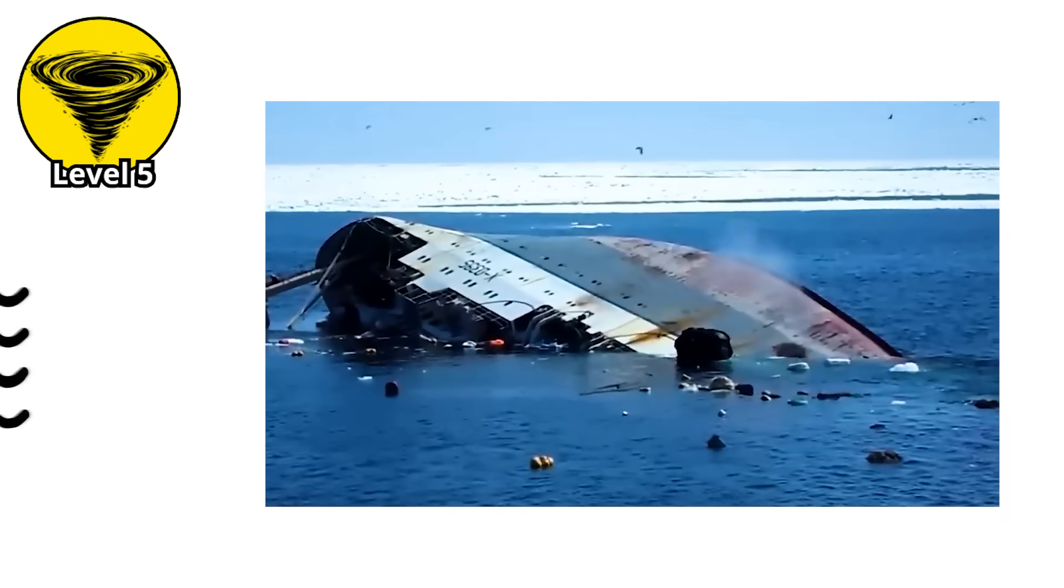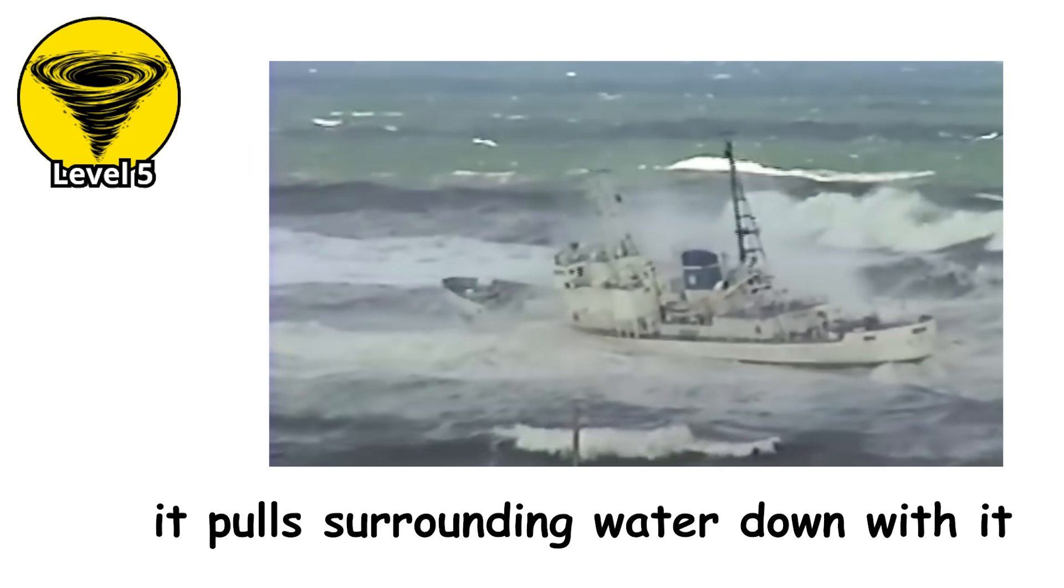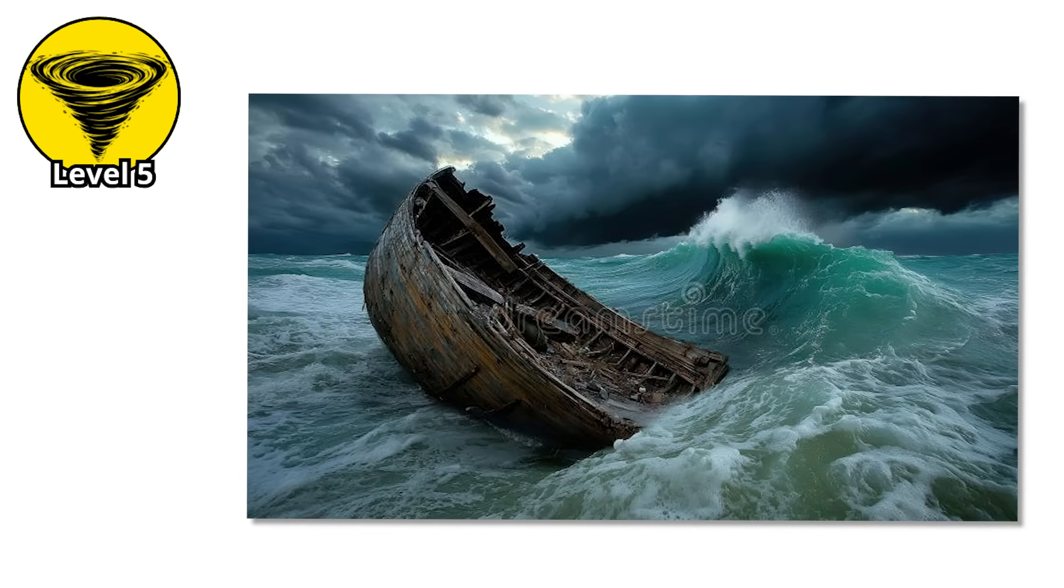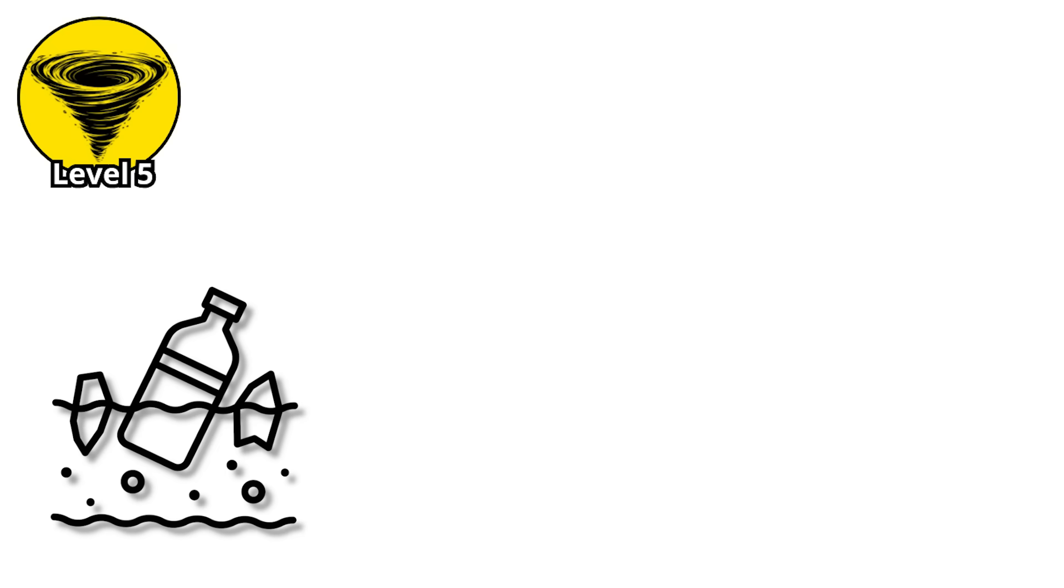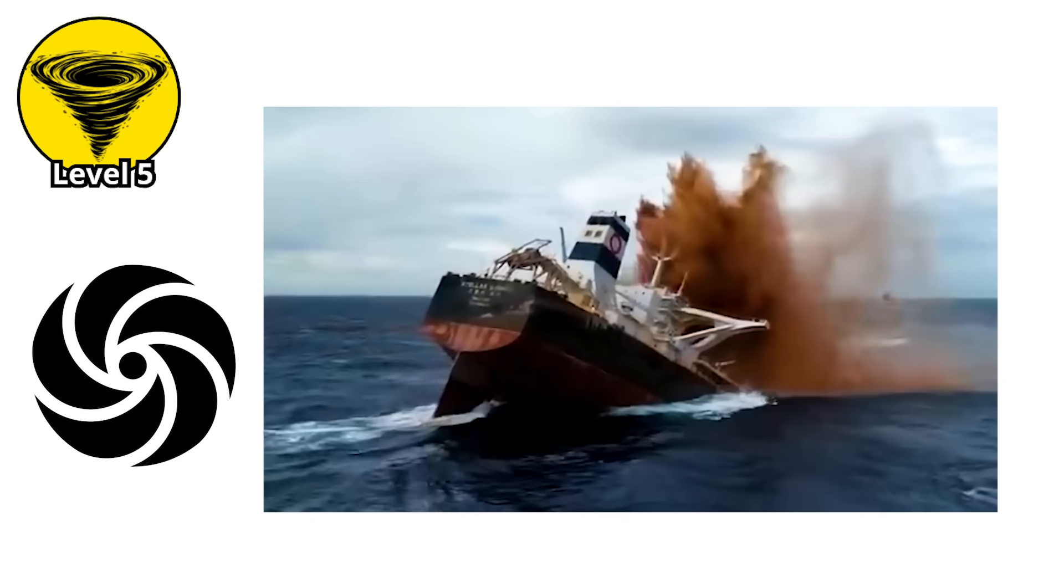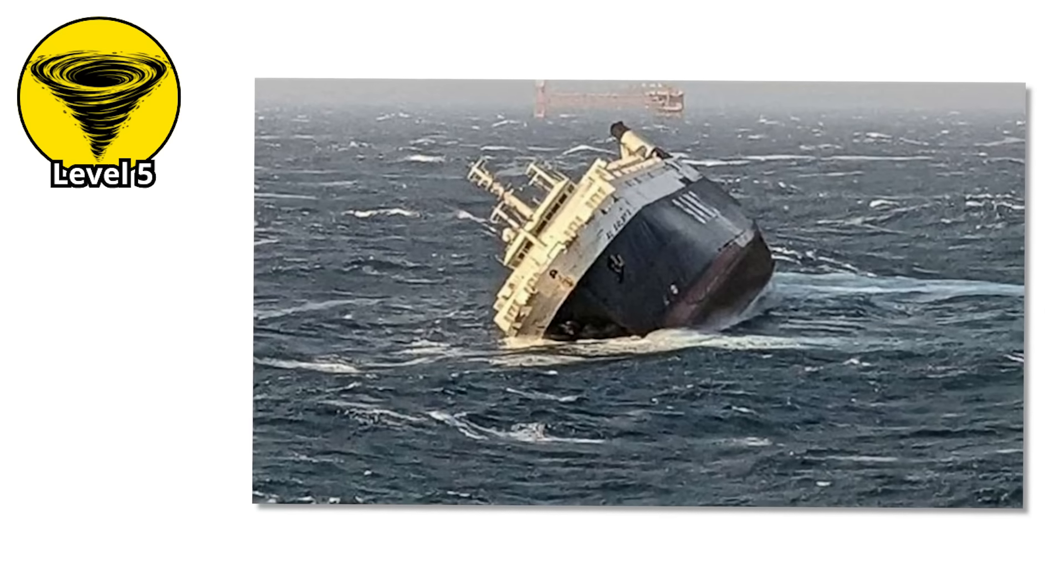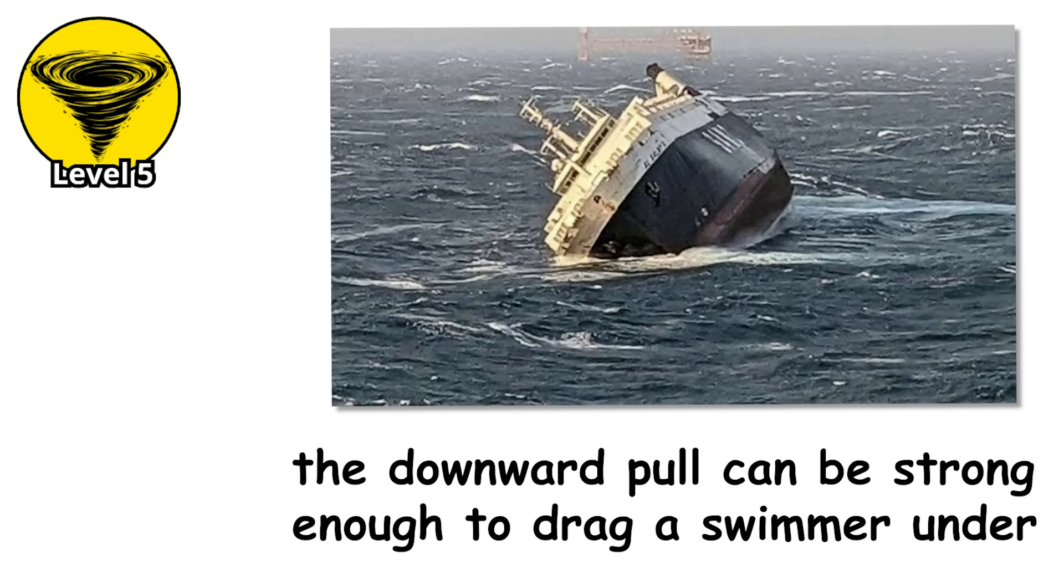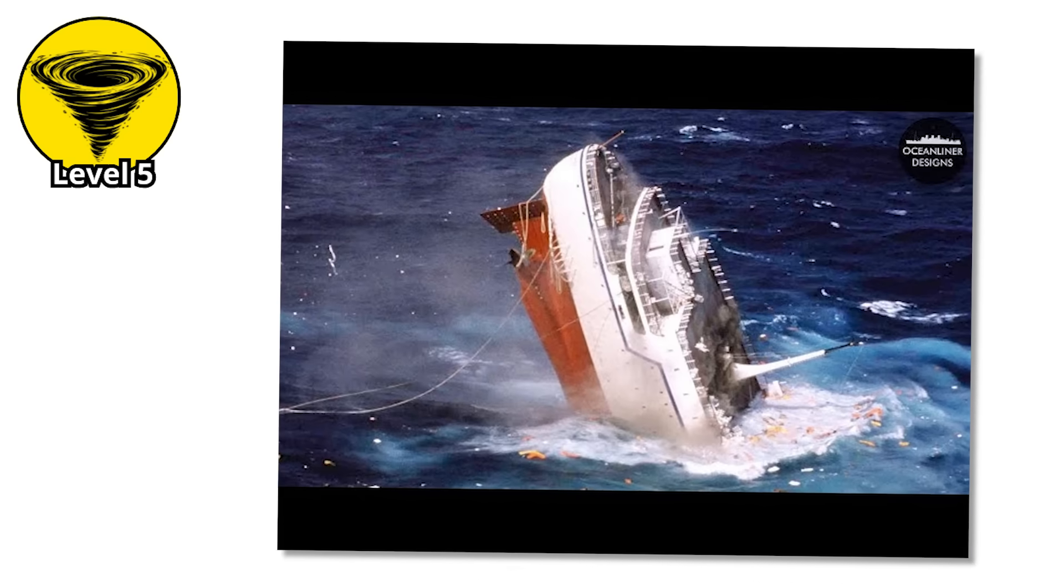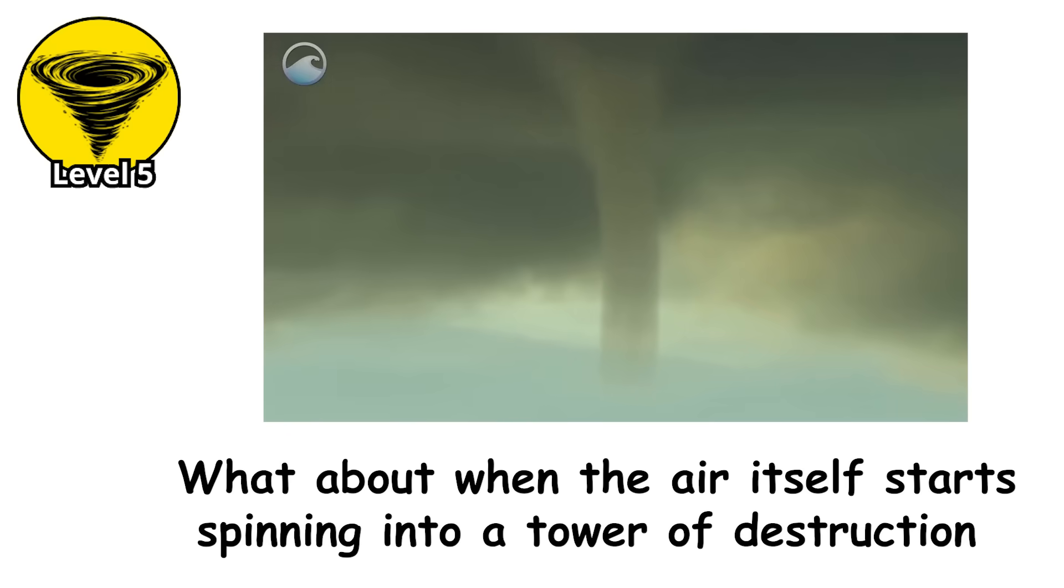But the most dangerous ship-generated vortex is what happens when a large vessel sinks rapidly. When a ship goes down, especially a large one, it displaces millions of gallons of water. As the hull descends, it pulls surrounding water down with it, creating a powerful downward current and a surface vortex that spirals inward toward where the ship disappeared. This suction effect can pull debris, lifeboats, and swimmers toward the sinking site. The myth that a sinking ship creates a massive vortex that will suck down anyone nearby is exaggerated, but not entirely false. The actual danger zone is usually within one to two ship lengths of the sinking vessel. Beyond that, the effect weakens rapidly. But within that zone, the downward pull can be strong enough to drag a swimmer under, especially if they're already struggling with debris or exhaustion. But these whirlpools still require something physical to create them, water or ships or machinery. What about when the air itself starts spinning into a tower?